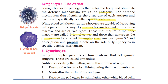B lymphocytes produce certain proteins called antibodies that act against antigens. Antibodies destroy pathogens in three different ways.